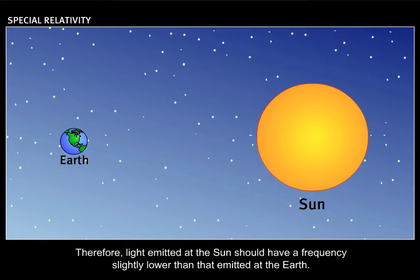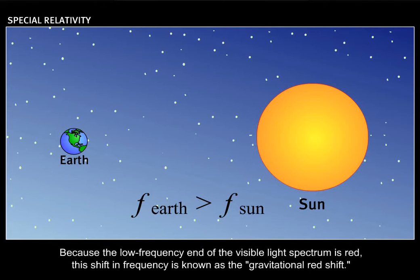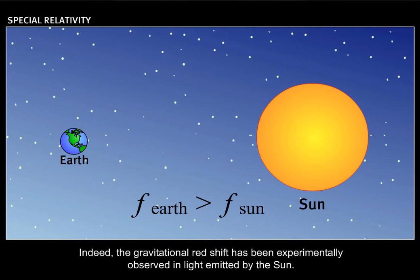Therefore, light emitted at the sun should have a frequency slightly lower than that emitted at the Earth. Because the low frequency end of the visible light spectrum is red, this shift in frequency is known as the gravitational red shift. Indeed, the gravitational red shift has been experimentally observed in light emitted by the sun.